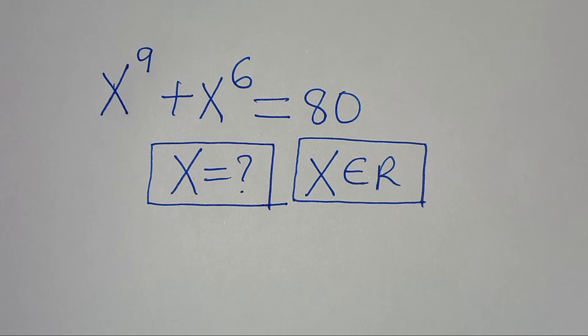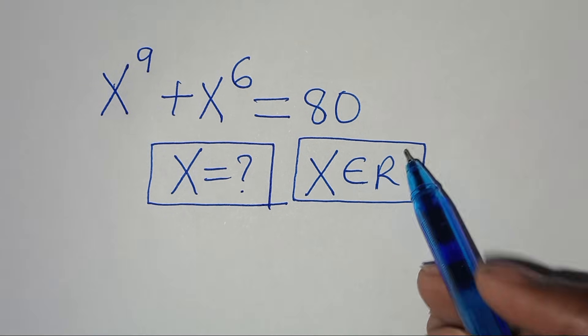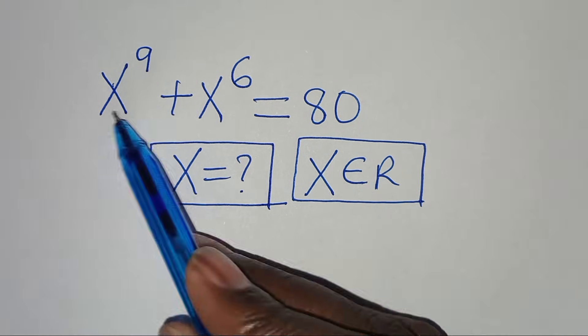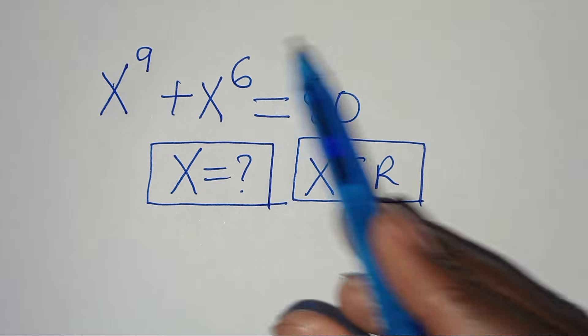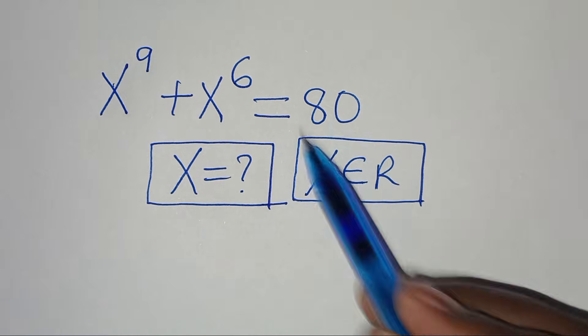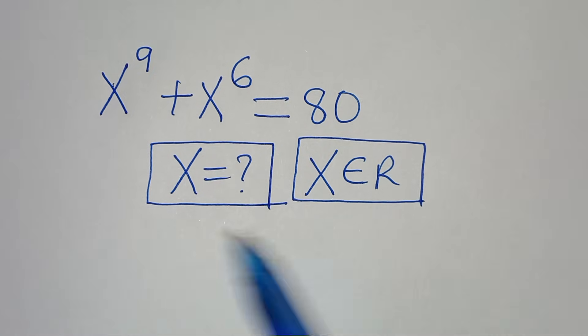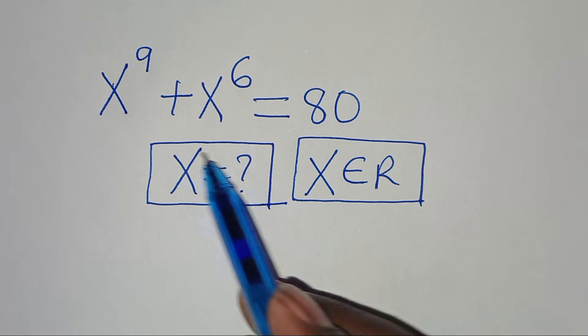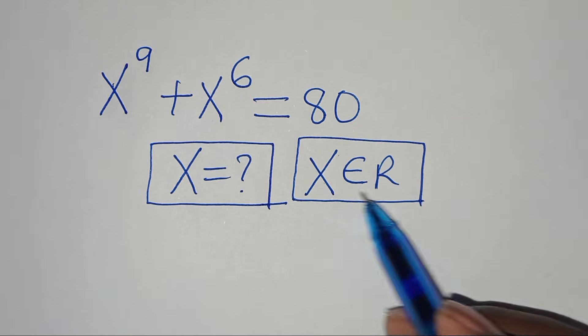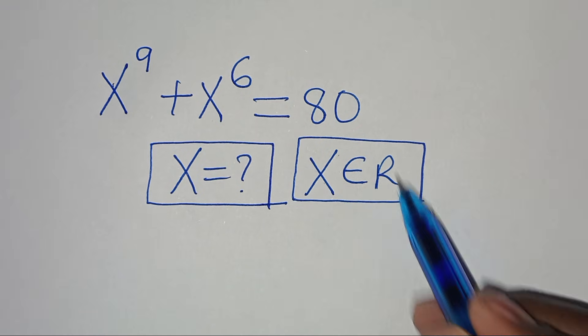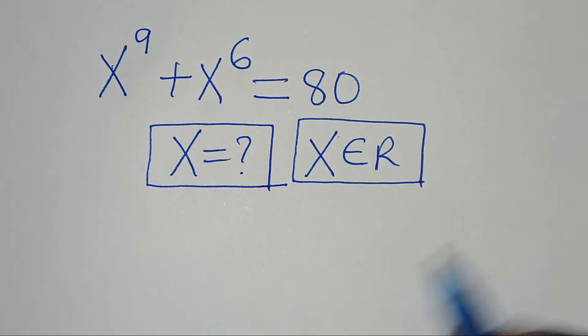Hello everyone, you are welcome to solve this nice algebra problem, which is x to the power of 9 plus x to the power of 6. This is equal to 80. So what is the value of x, given that x is an element of real numbers?